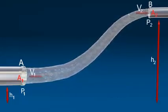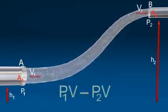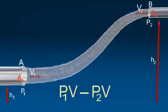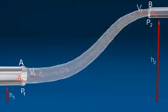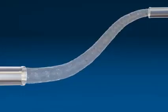Equation of continuity. Network done equals P1V minus P2V. The network done per second equals the increase in potential energy and kinetic energy per second from A to B.